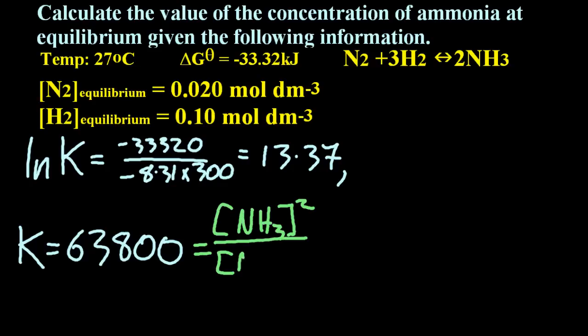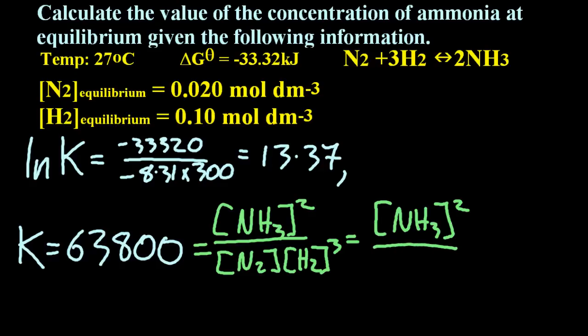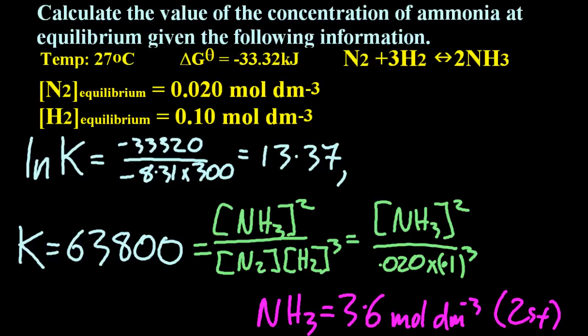Alright then, so K is 63,800. And I'm going to write out the equation for the equilibrium constant. Put in the two numbers that I have. And solve for the third number, which is the concentration of ammonia. So the concentration of ammonia ends up being 3.6 moles per decimetres cubed. And that makes sense to me. Kc is bigger than one, so there's probably going to be more ammonia than there is the other chemicals.